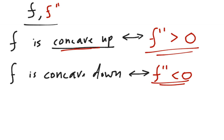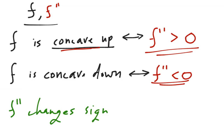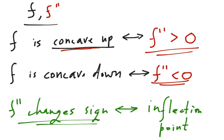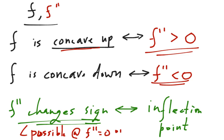Just like with f prime — when f prime equaled zero we had a critical point — here, when f double prime changes sign, we have a special kind of point called an inflection point. Note that this is f double prime changing sign, not necessarily f double prime equals zero. One way to find an inflection point is by setting f double prime equal to zero, but you must also check that f double prime is in fact changing sign at that point. Inflection points are possible where f double prime equals zero or f double prime is undefined.